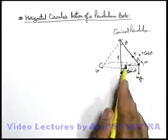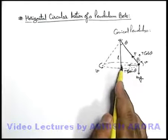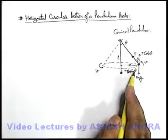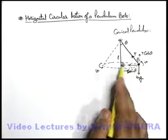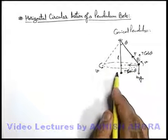Now in this situation, t sine theta is the force which is acting toward the center of the circle, and this t sine theta is providing the necessary centripetal force for this bob to remain in uniform circular motion.